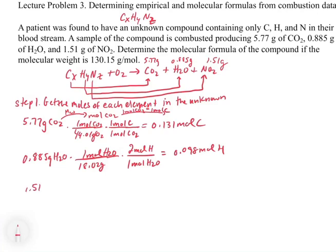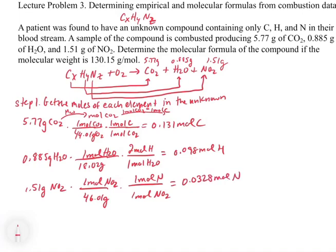And then finally, we have 1.51 grams of the nitrogen dioxide, which has a molecular weight of 46.01 grams for every one mole of NO2. And in this case, this is one mole of NO2 for every one mole of nitrogen. So that's going to give us 0.0328 moles of nitrogen.